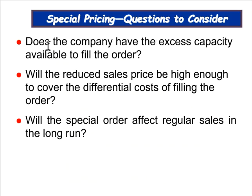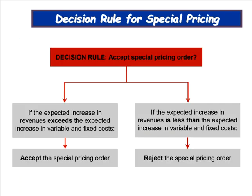Some questions to consider: Does the company have excess capacity to fill the order? If not, you wouldn't want to accept less than the normal sales price. Is the reduced price high enough to cover the differential costs? Will the special order affect regular sales in the long run? The basic decision rule: if the expected increase in revenues exceeds the expected increase in variable and fixed costs, accept the special order; if revenues increase less than costs, reject it.